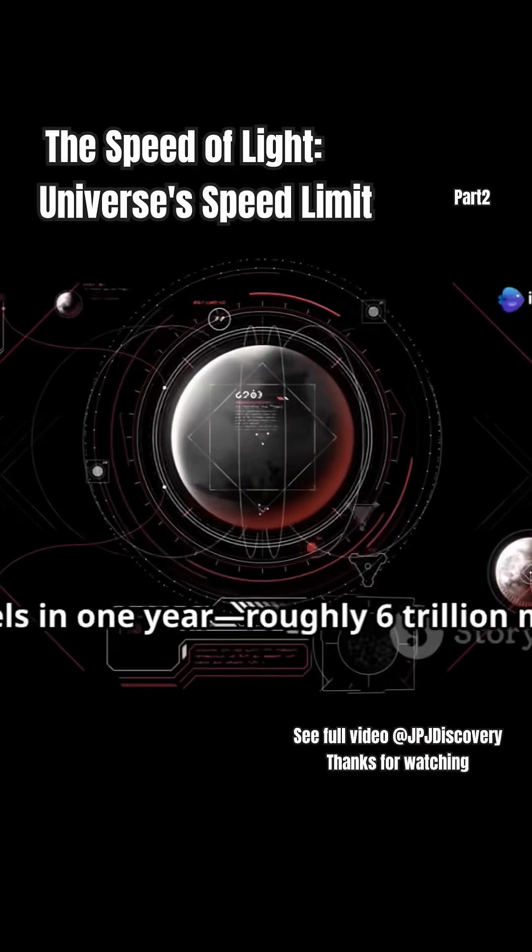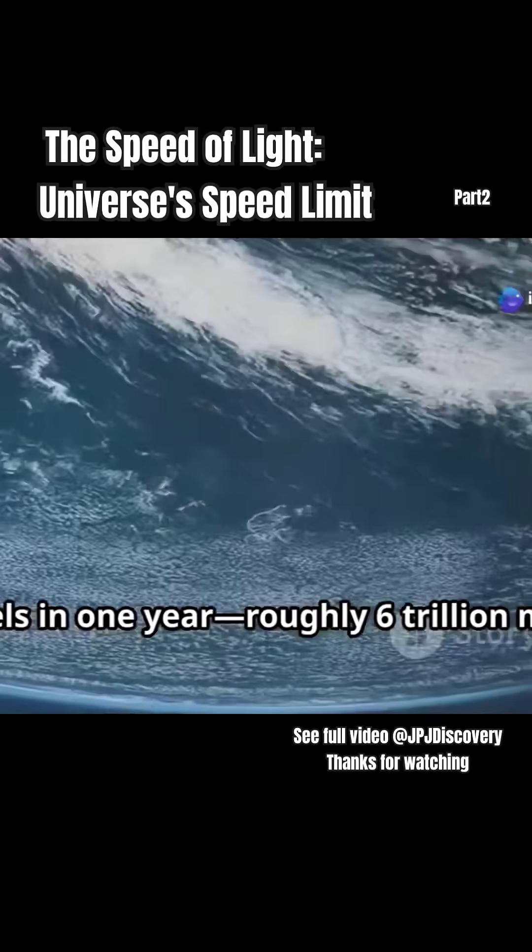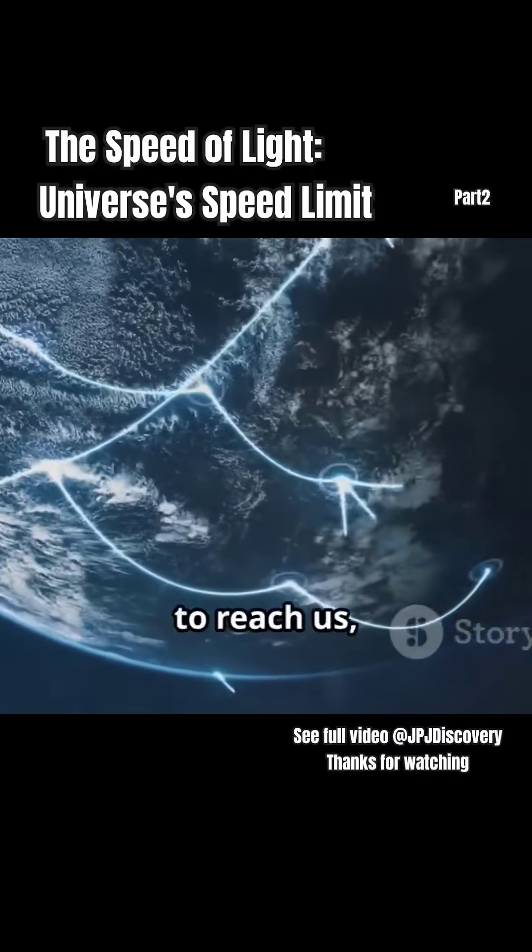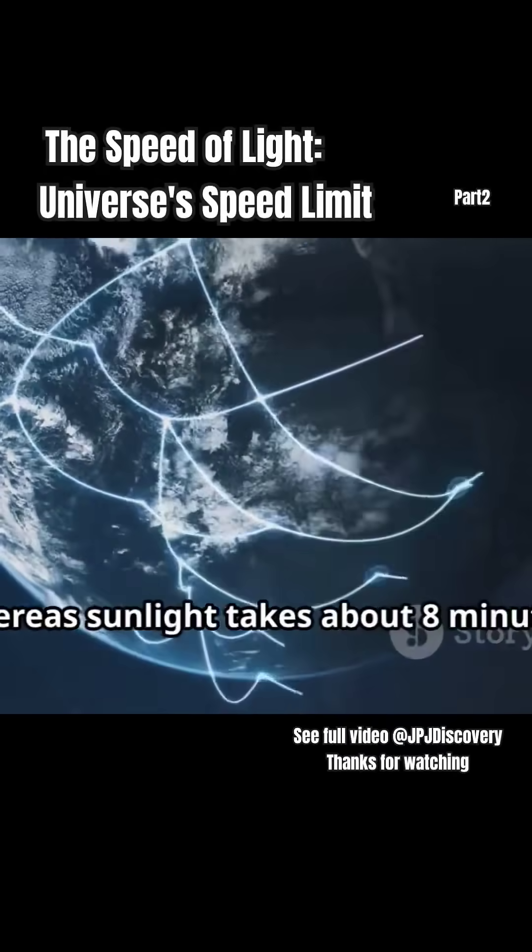A light year is the distance light travels in one year, roughly 6 trillion miles. Light from the moon takes just one second to reach us, whereas sunlight takes about 8 minutes.